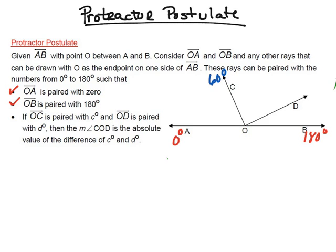This is not drawn to scale, so just go with me here. Ray OC is going to be sitting at 60 degrees. Then we'll take a look at ray OD, and for this example, we're going to assume that it's going to go at 130 degrees. So imagine we have that protractor sitting over these angles: ray OA at zero degrees, ray OC pointing at 60 degrees, ray OD pointing at 130 degrees, and ray OB pointing at 180 degrees.